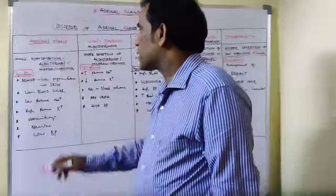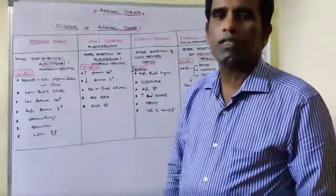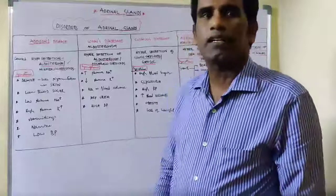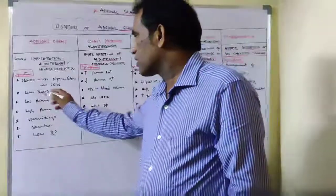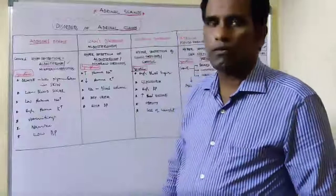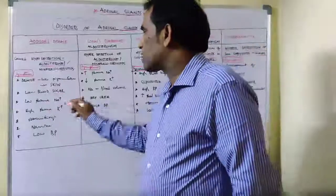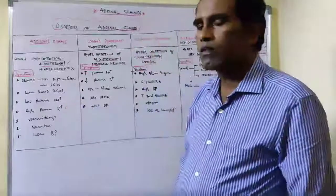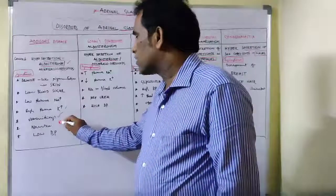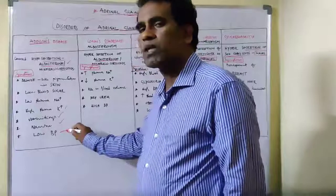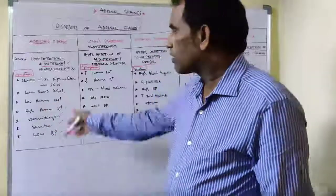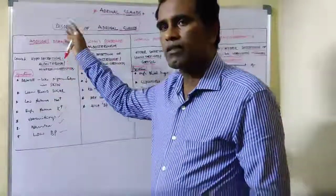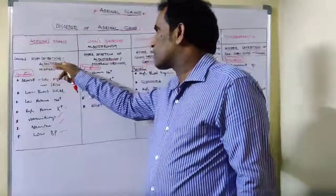The symptoms of Addison Disease include bronze-like pigmentation in skin, especially on the face and neck in sun-exposed parts, low blood sugar, low plasma sodium ions, high plasma potassium ions, vomiting, nausea, and low blood pressure. These are all symptoms of Addison Disease caused by hyposecretion of Aldosterone.